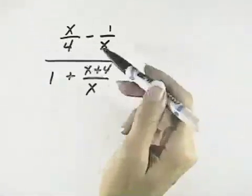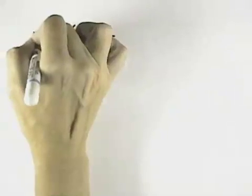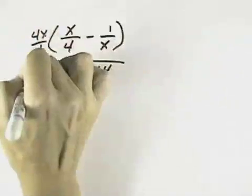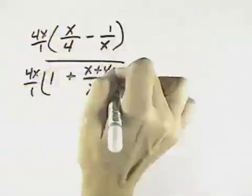So we have a 4 and an x. That means we can multiply through the entire numerator by 4x over 1 and the entire denominator by 4x over 1.